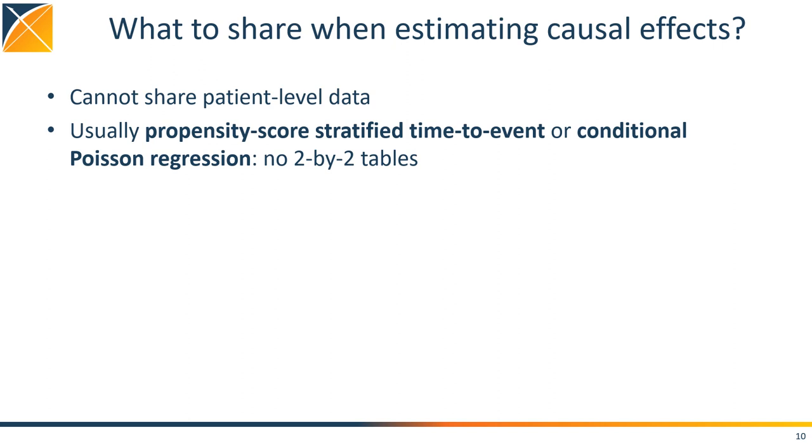And because we typically have a somewhat complicated model, such as a propensity score stratified time-to-event or conditional Poisson regression, we can't simply share two-by-two tables. In the example I showed earlier, we simply shared point estimates and standard errors. But is that the right thing to do?